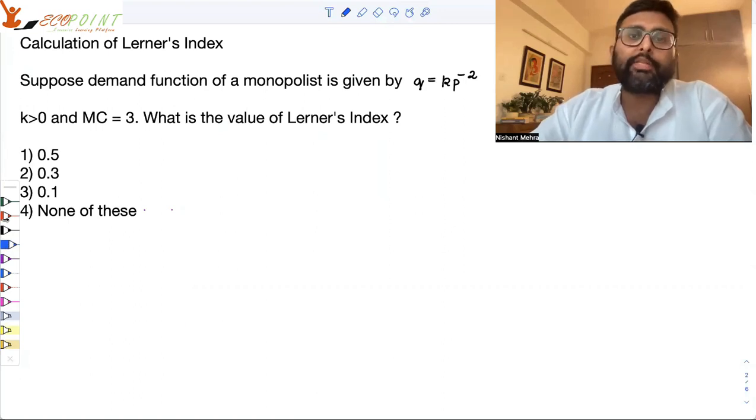Suppose demand function for a monopolist is given by q equals k p to the power minus 2. k is greater than 0, MC is 3. What is the value of the Lerner's Index?